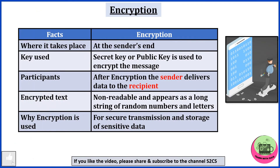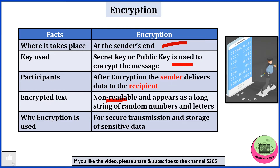Some facts about encryption. Where does it take place? At the sender's end. What key is used? Secret key or public key. After encryption, the sender delivers data to the recipient. The encrypted text is non-readable and appears as a long string of random numbers and letters. Why is encryption used? For secure transmission and storage of sensitive data.